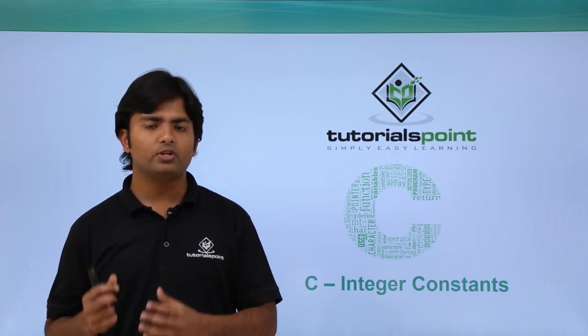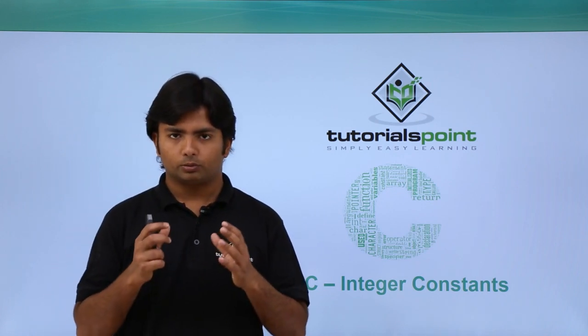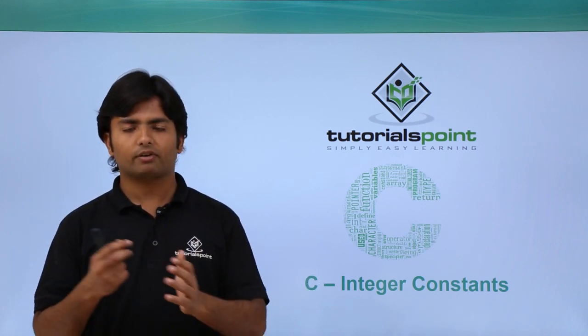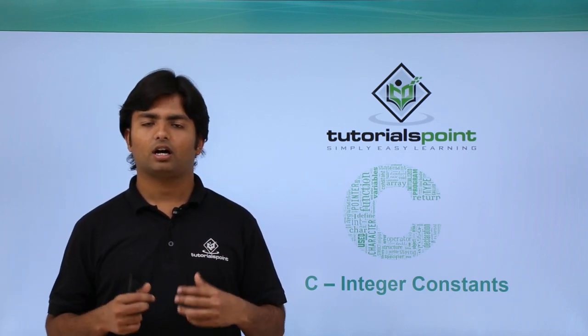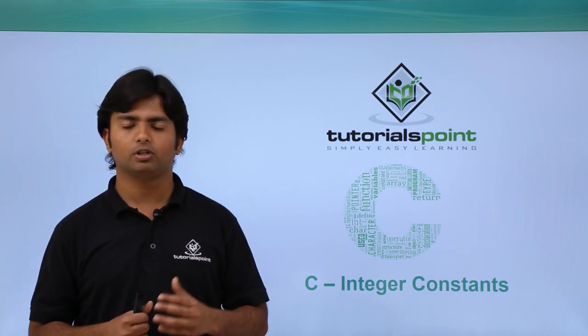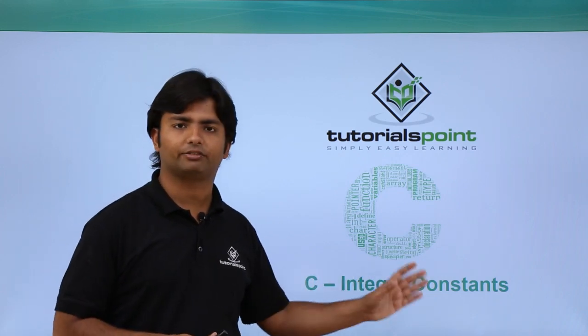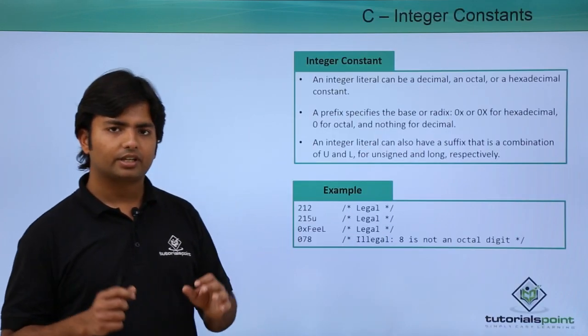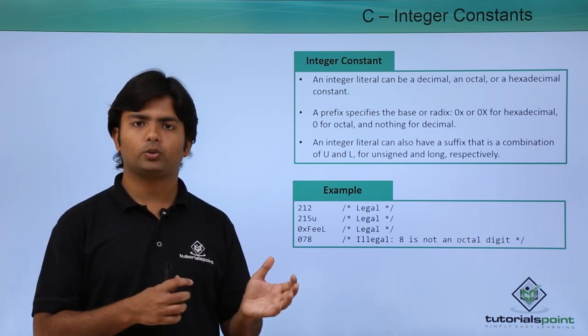Basically, whatever you will write on the right-hand side of the equal operator is a constant, variable, or expression. But here we will see about the constants figure only. In the integer, apart from the normal numbers which you can write like one, two, three, or any whole number...